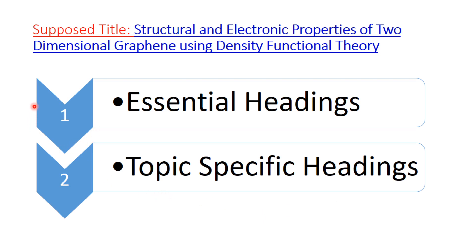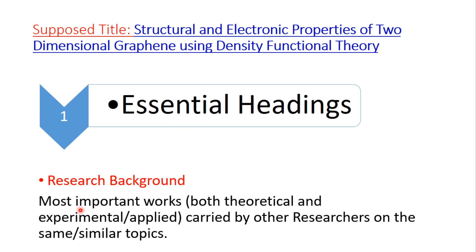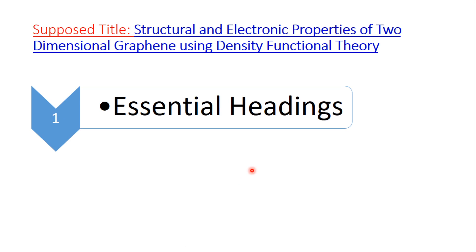To write chapter one quickly, one should know the essential headings and topic-specific headings. The first essential heading is research background, which mostly consists of important works — theoretical or experimental — carried out by other researchers on the same or similar topics.